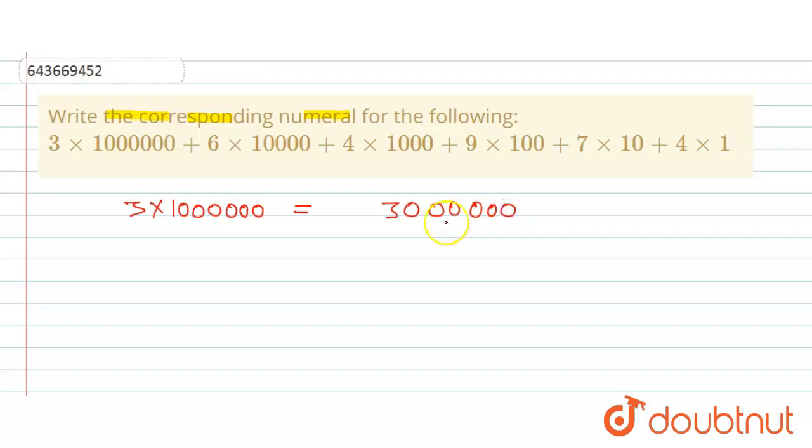Okay, thirty lakh. And six into ten thousand, so this is nothing but six into ten thousand, which is sixty thousand. Okay, so sixty thousand can be written as this.